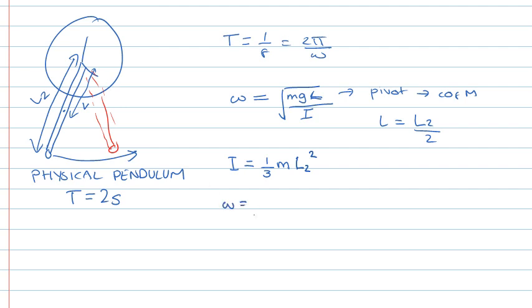So now we can substitute that into our expression for omega. So omega can be rewritten as the square root of mg. And we've got L2 over 2 as the length there from the pivot to the centre of mass. And on the bottom we have our rotational inertia I, which was a third m times L2 squared.